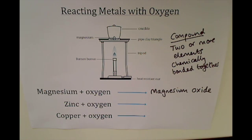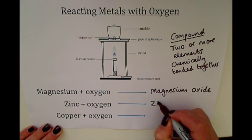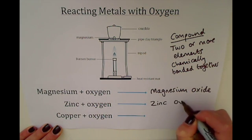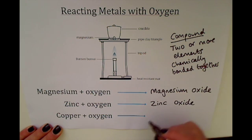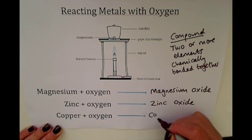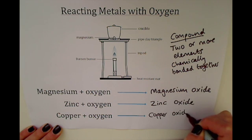Pause the video and try to complete the word equations for zinc and oxygen and copper and oxygen. Zinc plus oxygen would have made zinc oxide, and copper plus oxygen would have made copper oxide.